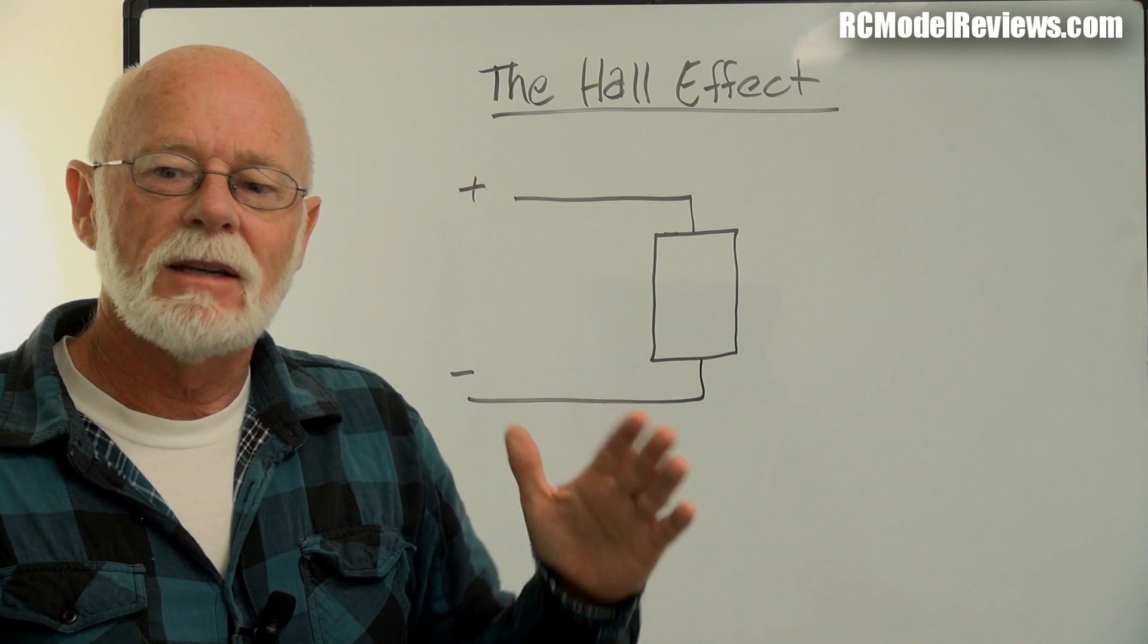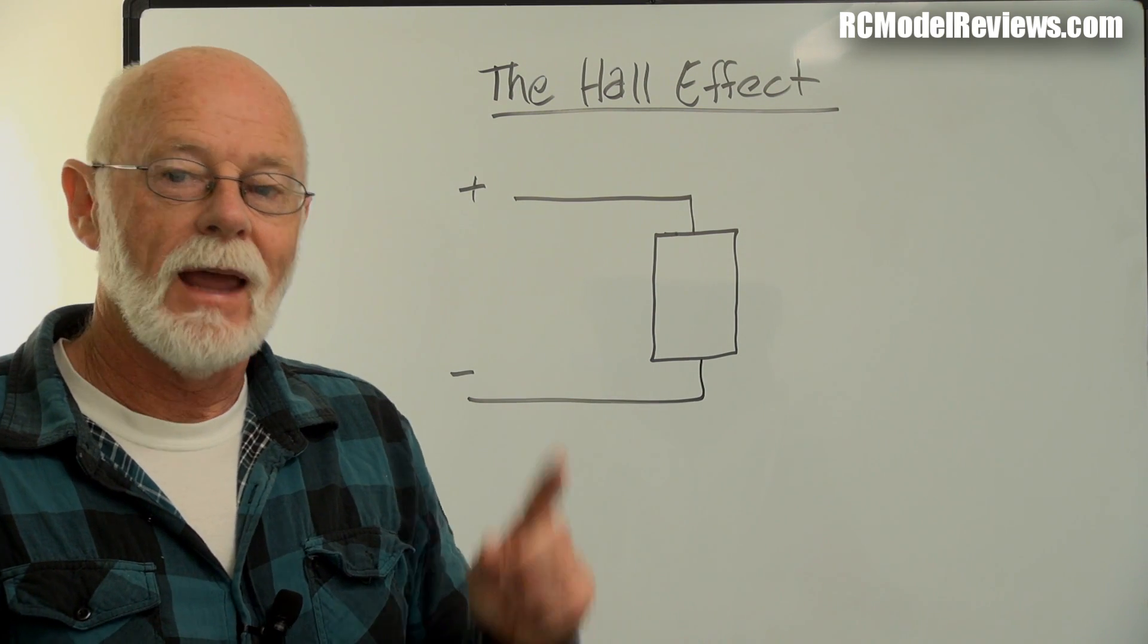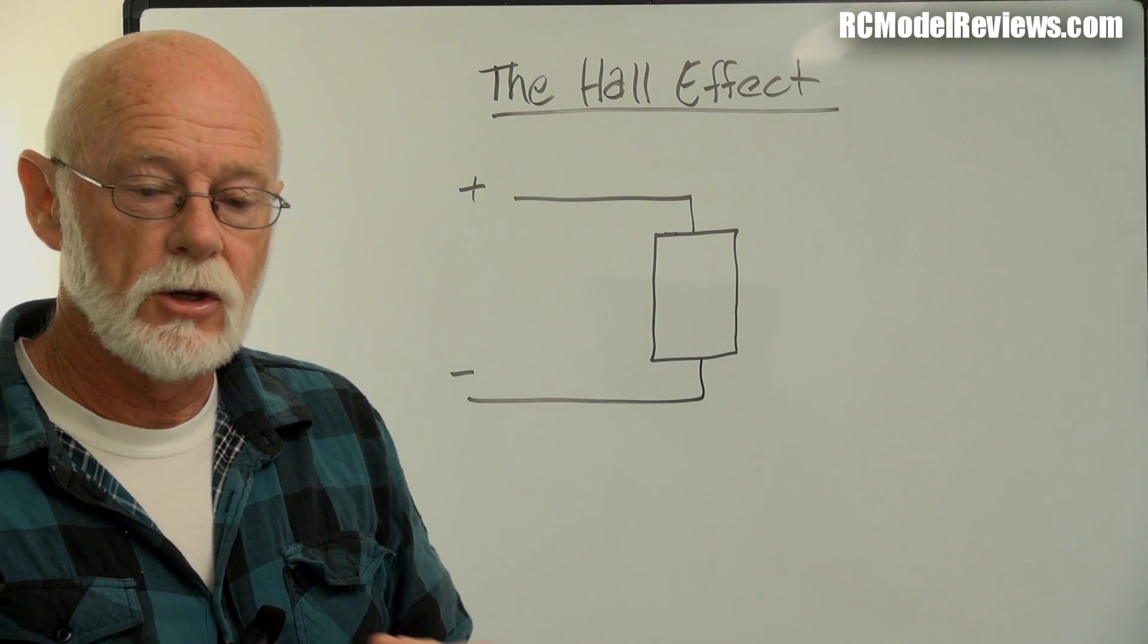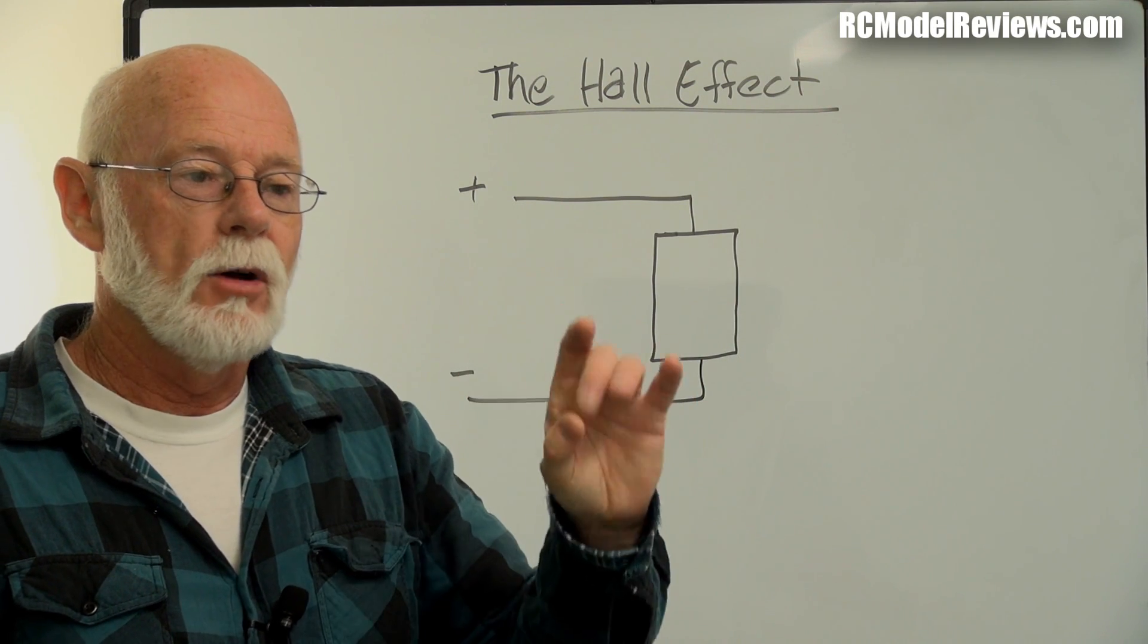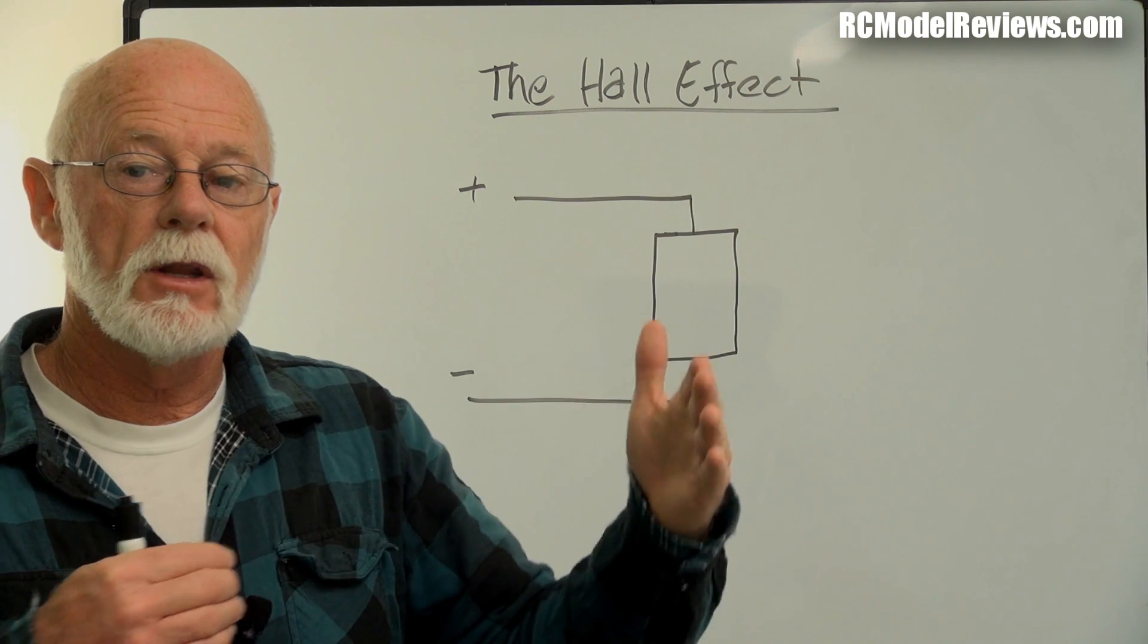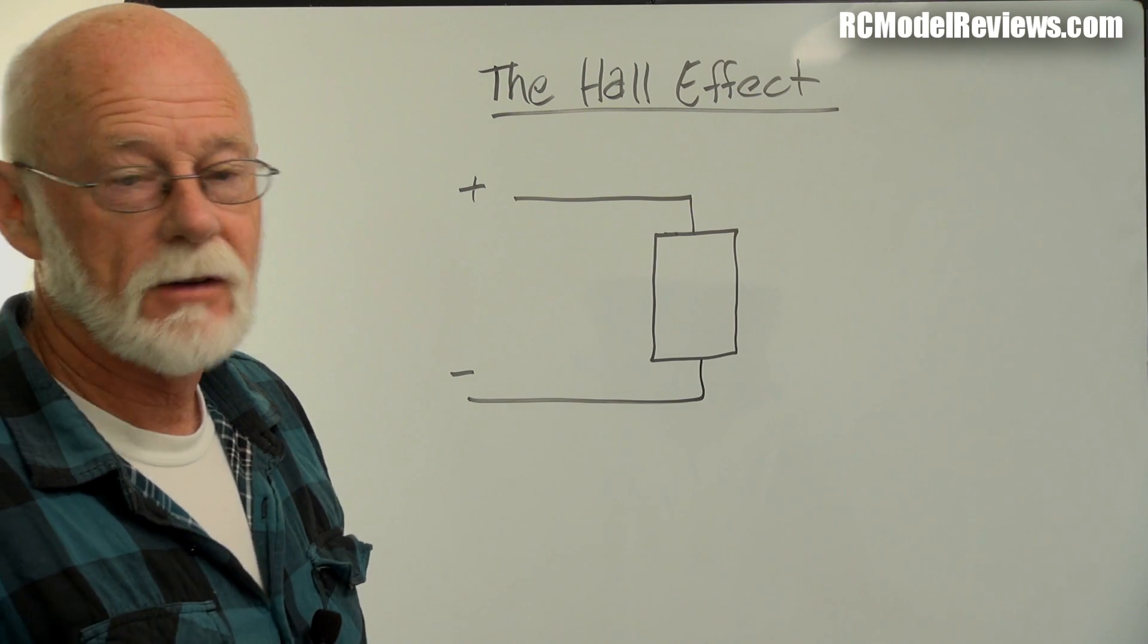Basically anywhere that you want to measure a magnetic field, the direction or the intensity of a magnetic field, and therefore sometimes the intensity of an electrical current, because when a current flows through a wire it creates a magnetic field. You can use a Hall Effect sensor to measure the strength of that field and tell how much current is flowing without even breaking the wire to put a meter in.